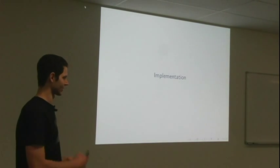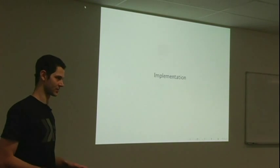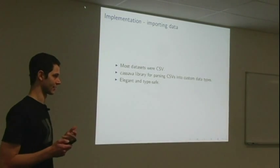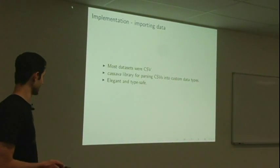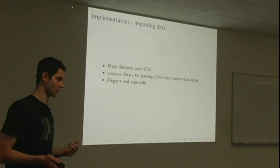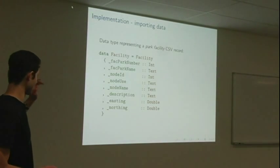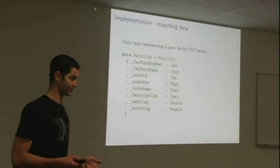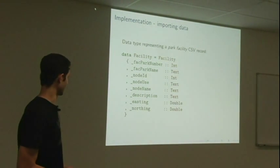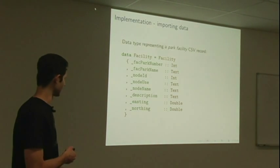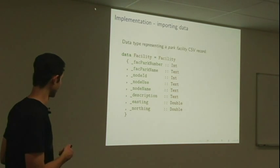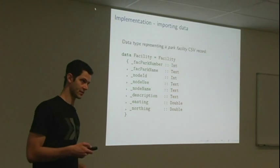So the implementation. I'm just going to move very quickly through these slides. I'm not going to explain the Haskell syntax or the particular abstractions that are in use, but hopefully you'll get a sense that it can actually be quite elegant. Most of the data sets were CSVs. There's a Haskell library called Cassava, which is quite nice for parsing CSVs. This is a data type definition for a facility. This corresponds to just one record in a CSV that had park facility information.